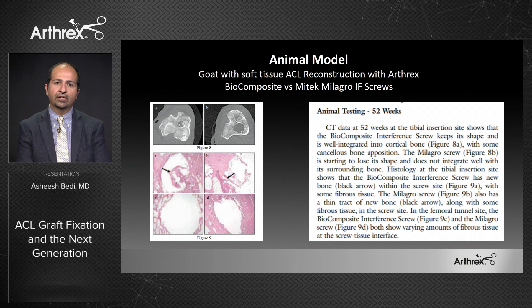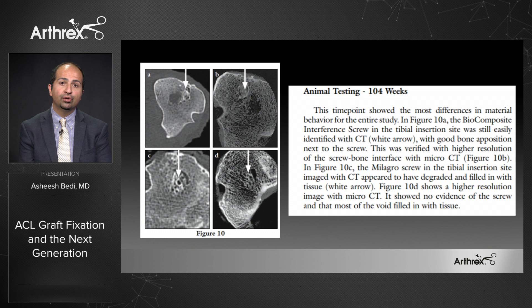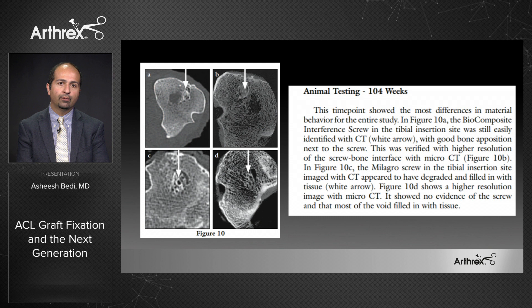This is 52-week, or one-year, data in a goat model — soft tissue ACL reconstructions performed with the Arthrex fast thread screw versus a comparable material. You can appreciate the favorable osseointegration: the screw and its associated track and tunnel are largely incorporated with woven bone that is subsequently maturing into native mature bone. We also have two-year data showing no foreign body reaction on micro-CT and CT, with excellent incorporation and essentially full bone stock, so a potential revision ACL reconstruction would require no concern over voids or a staged procedure.